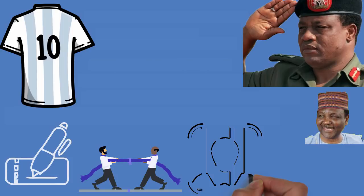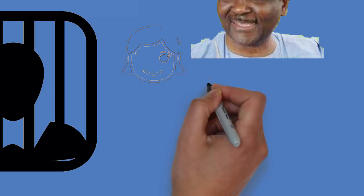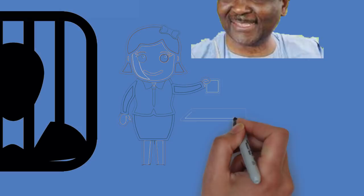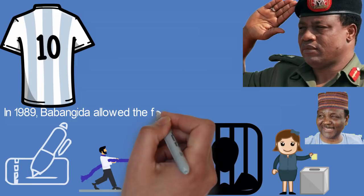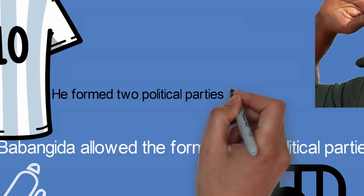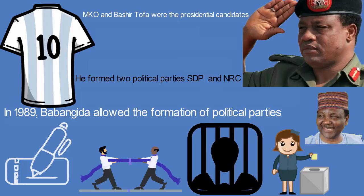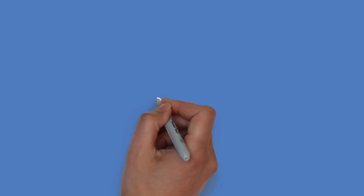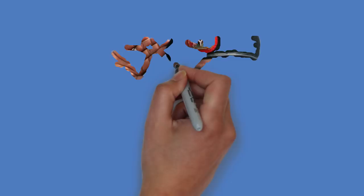In 1989, Babangida legalized the formation of political parties and after a census was carried out in November 1991, National Electoral Commission NEC announced on 24 January 1992 that both legislative elections to a bicameral National Assembly and a presidential election would be held later that year. A process of voting was adopted which was referred to as option A4. This process required that any candidate needed to pass through adoption from the local level to any height of governance. Babangida formed two political parties, namely the SDP and NRC National Republican Convention for the elections. The National Assembly elections were held with the Social Democratic Party winning majorities in both houses of the National Assembly.